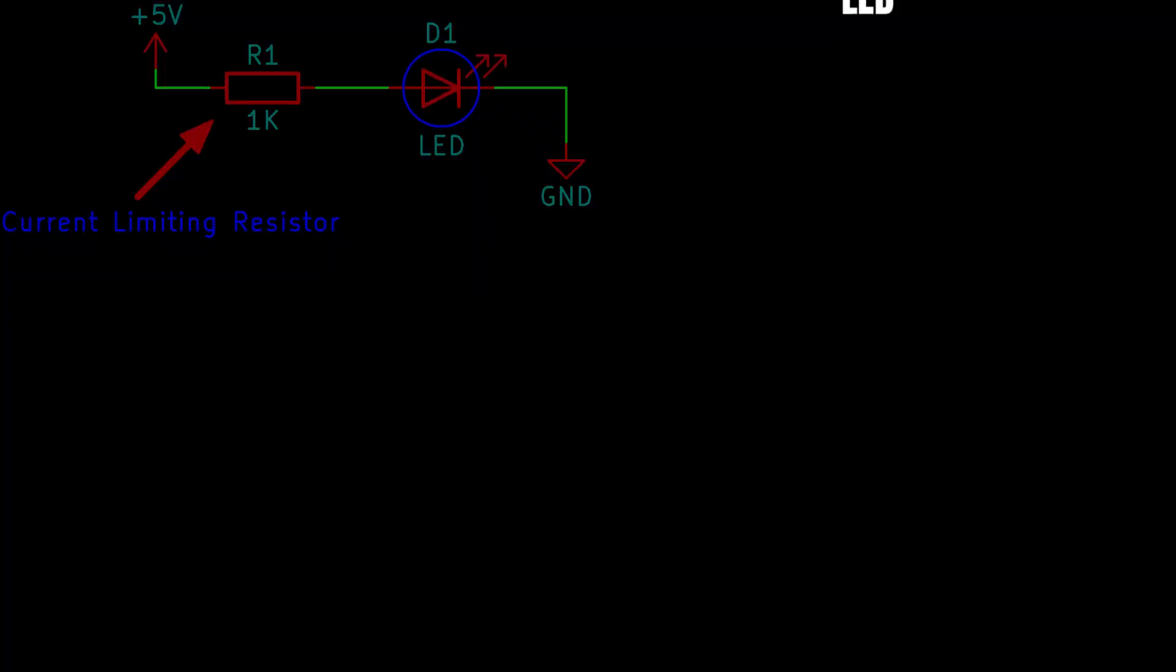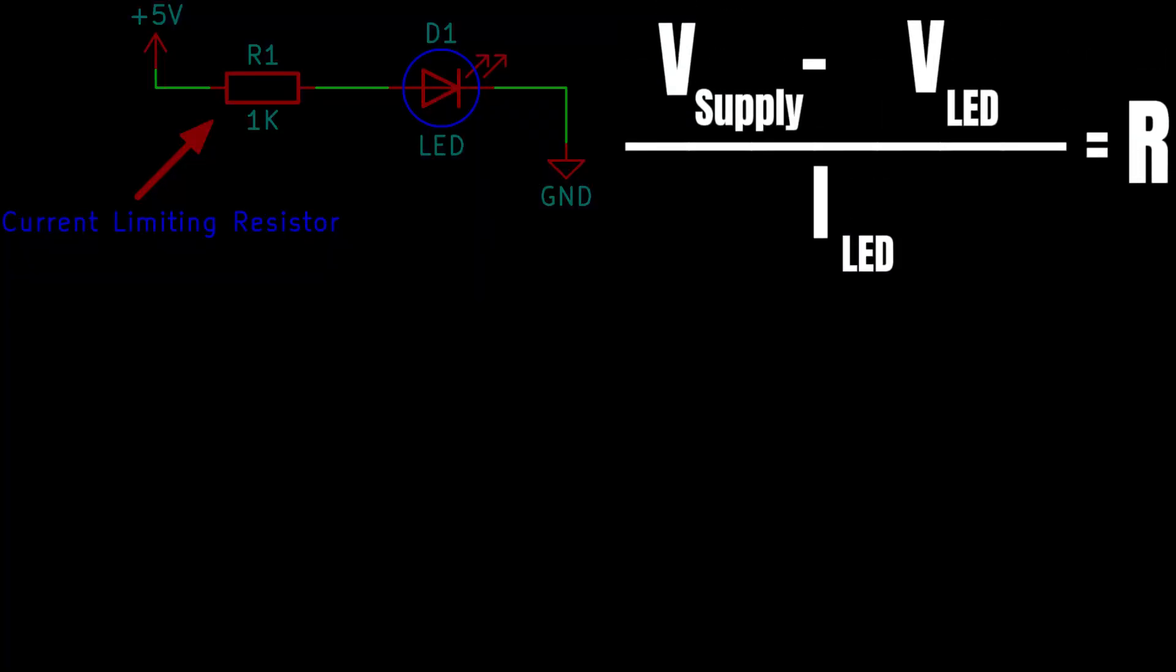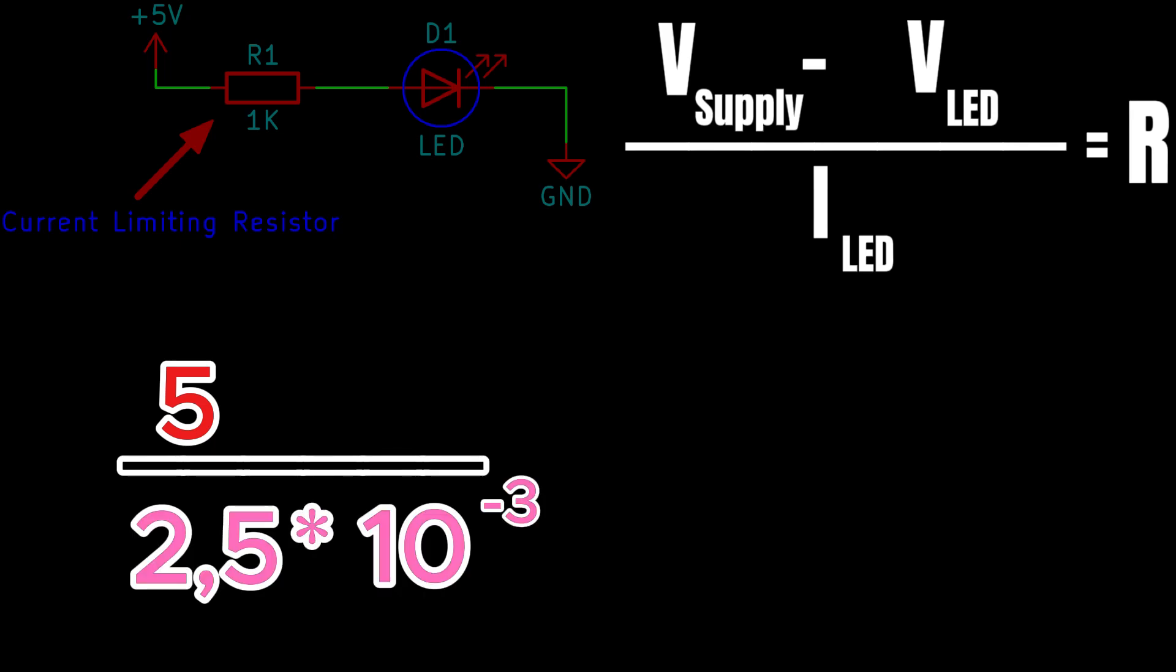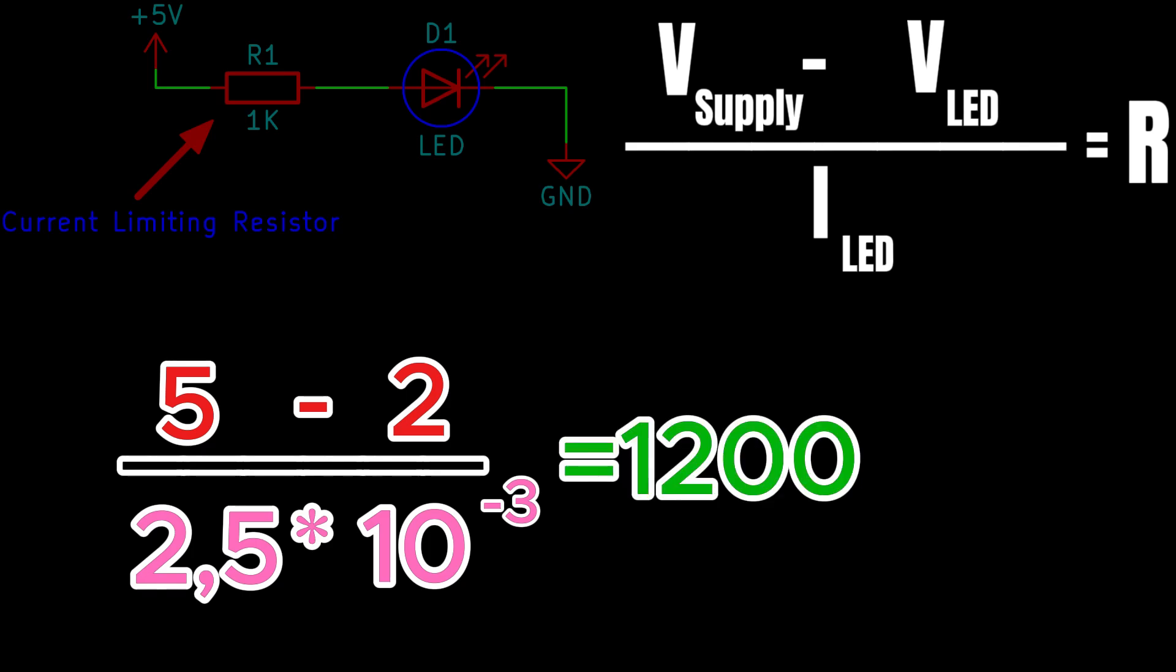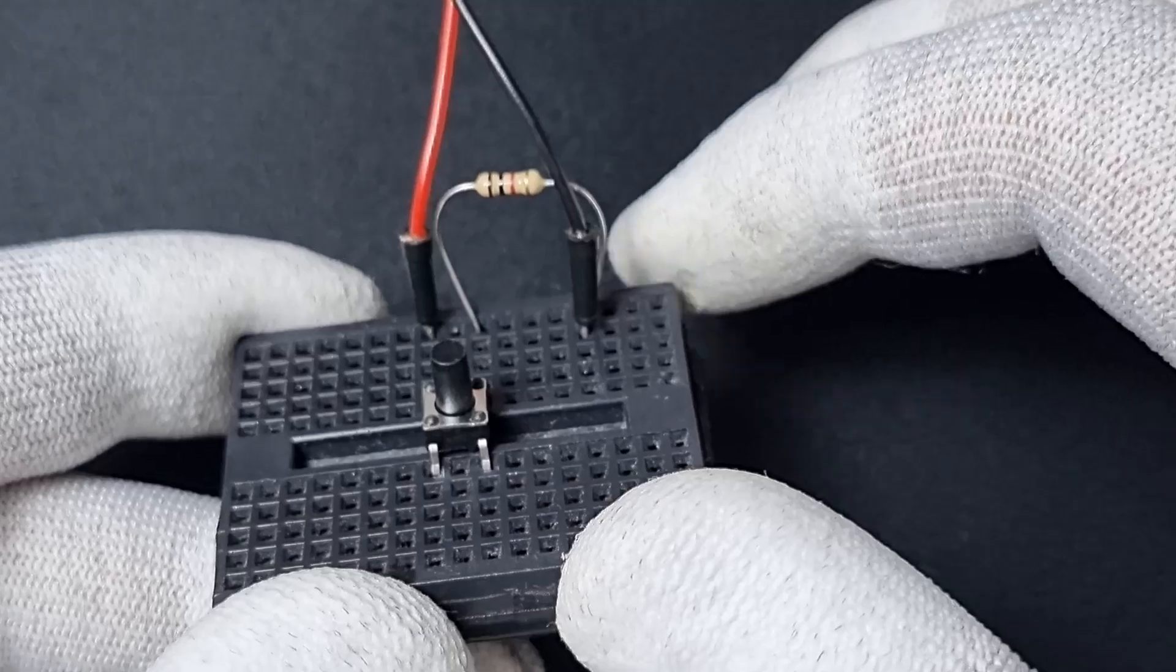You can calculate the required resistor value using this formula. Our supply voltage is 5 volts and I want my LED to run at 2.5 milliamps with a forward voltage of 2 volts. So using the formula, we find that the resistor needed is around 1 kilo ohm. This is how we calculate the resistor value.